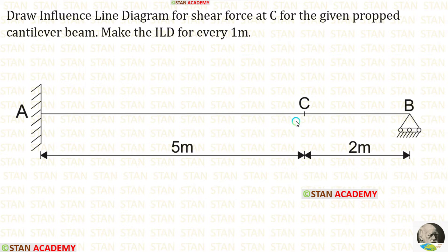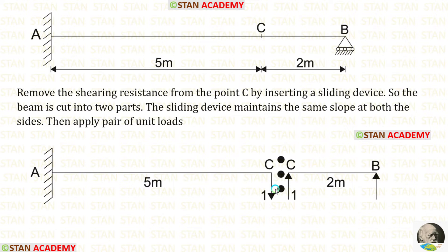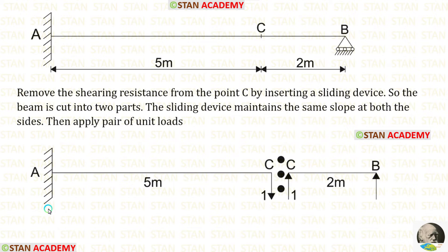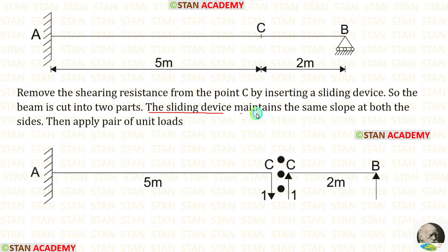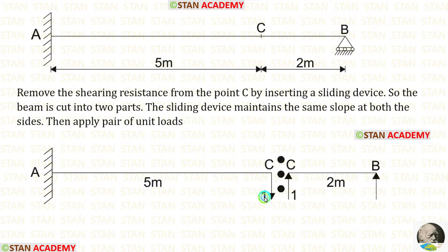We have to make influence line diagram for the shear force at point C, which is located at 2 meters from point B. At point C, let us insert a sliding device. When we do that, the shearing resistance from point C is removed, so the beam is cut into two parts. The sliding device maintains the same slope at both sides. Then we have to apply a pair of unit loads — on the left side, the unit load should be acting downwards, and on the right side, the unit load should be acting upwards.